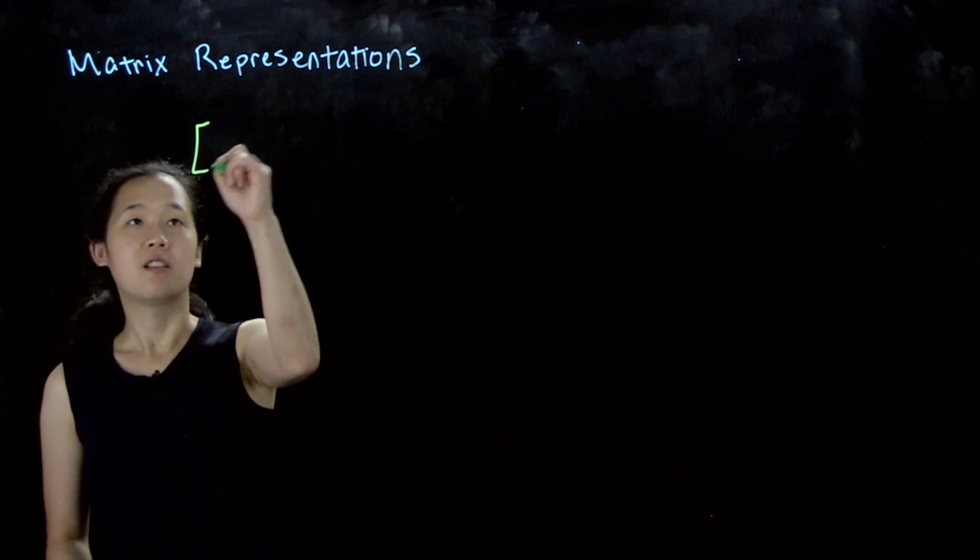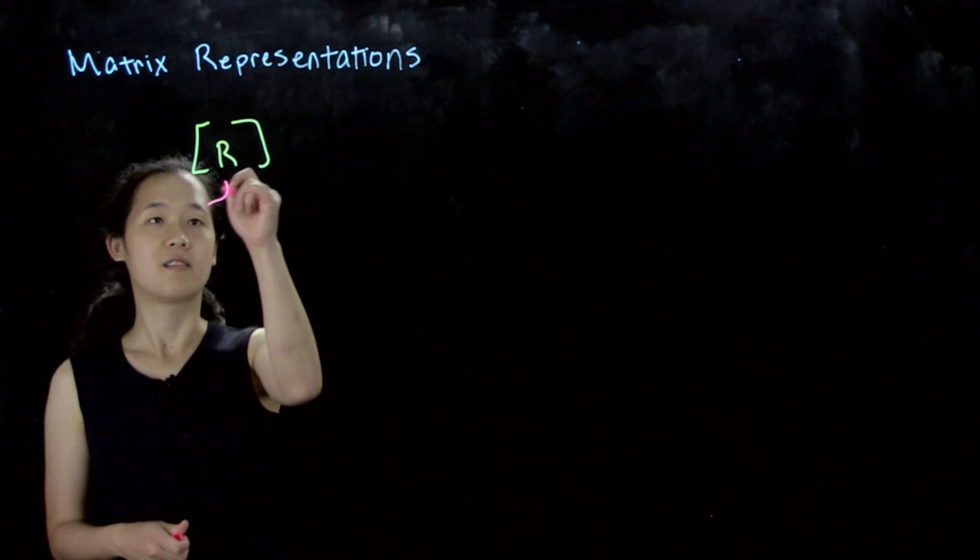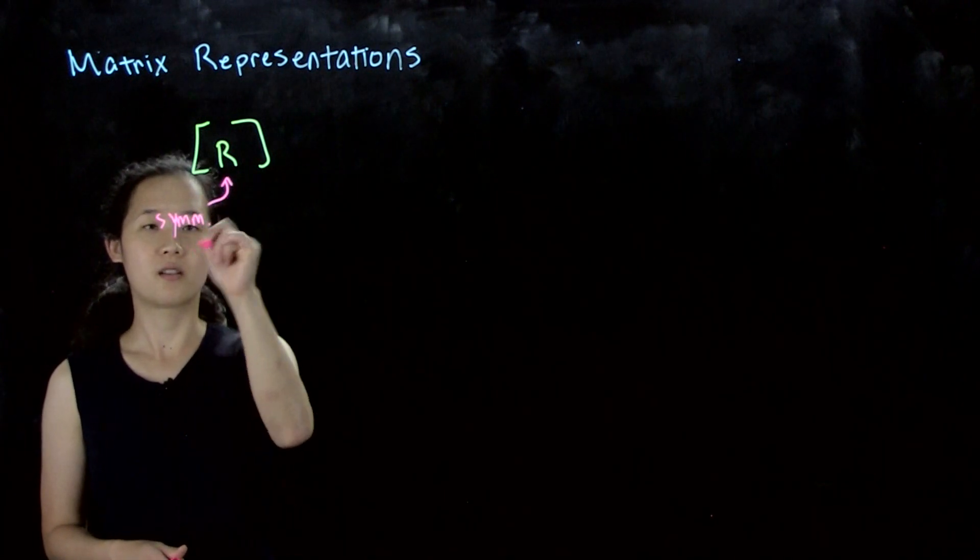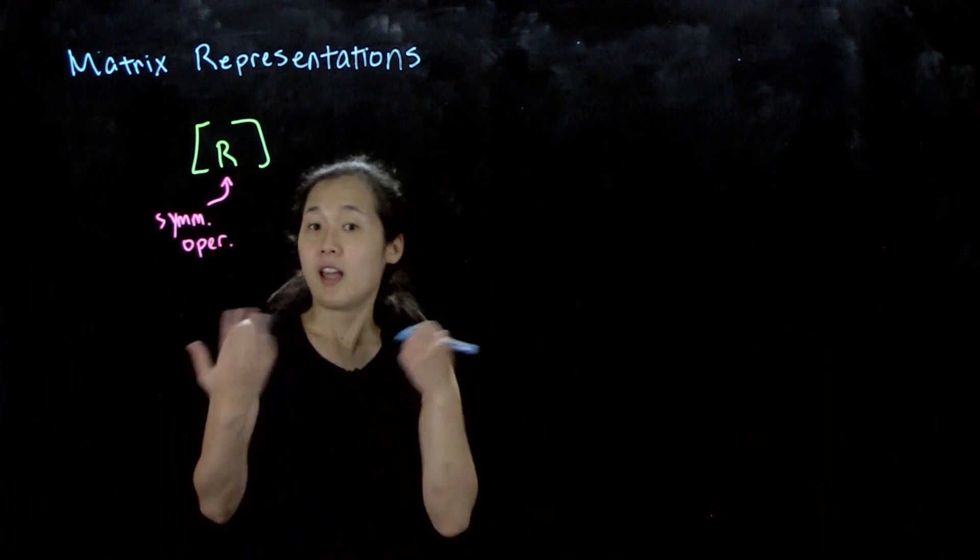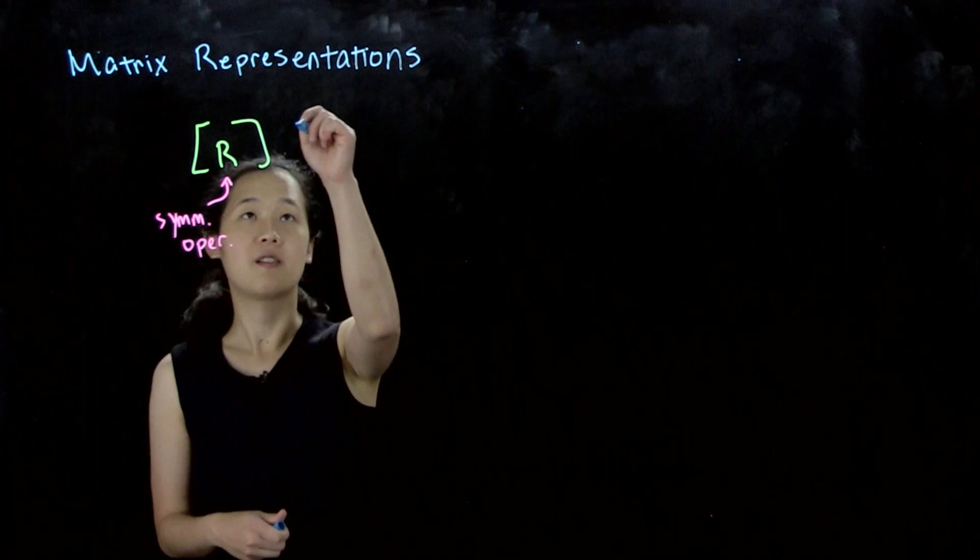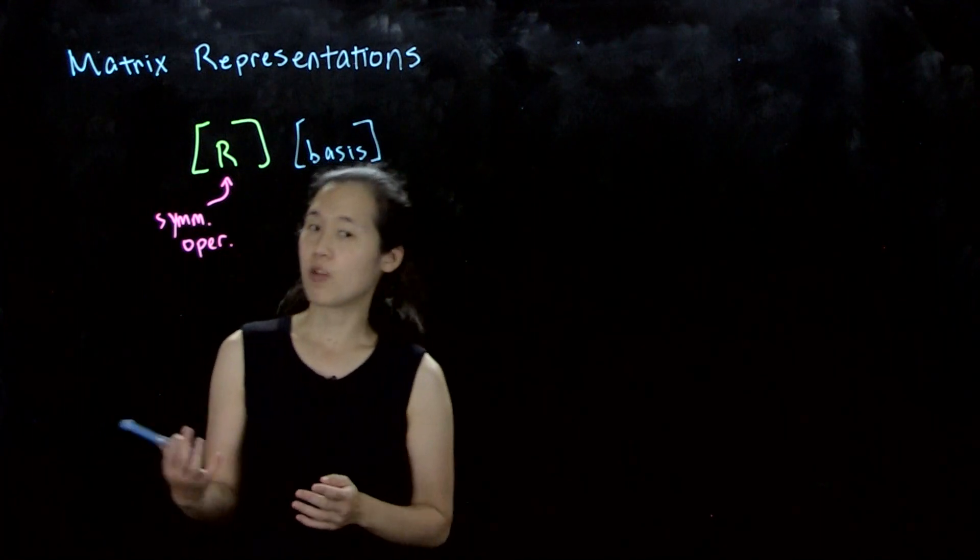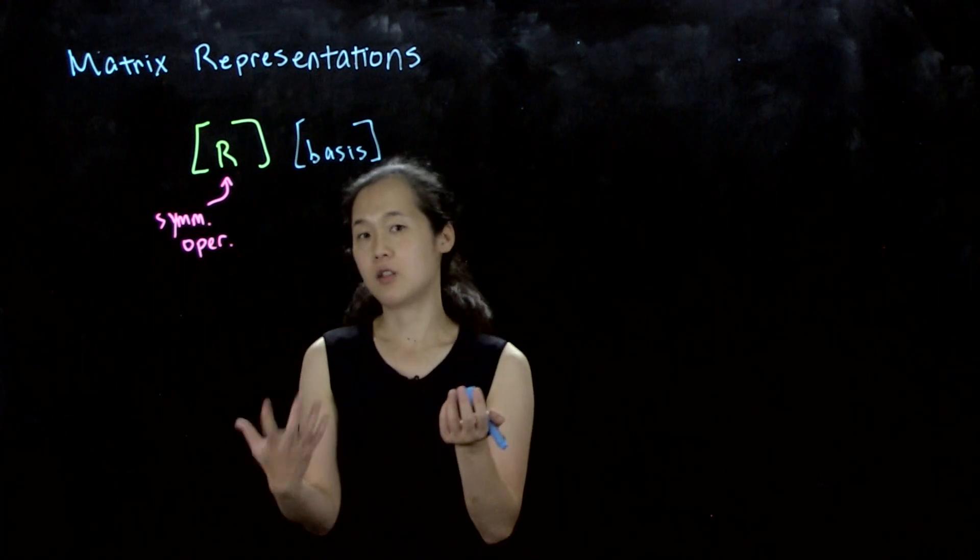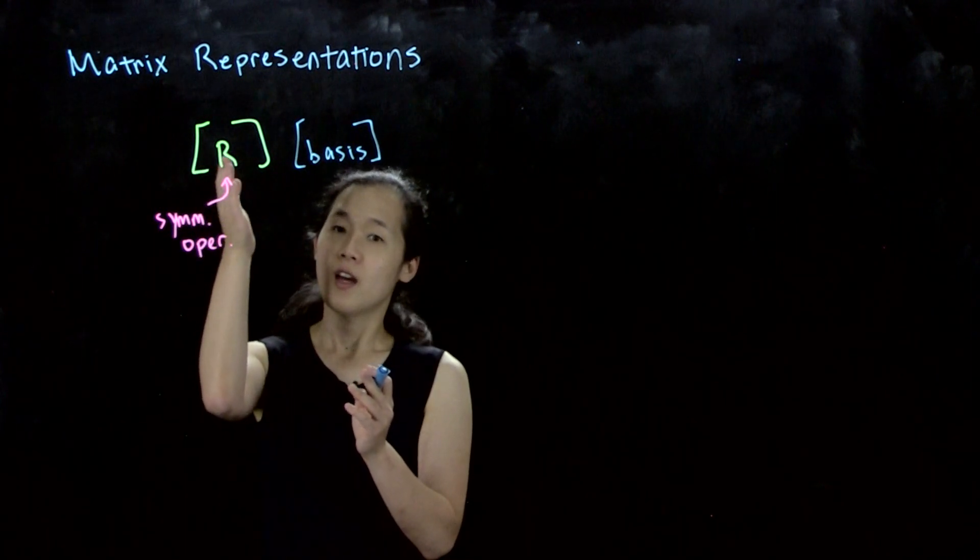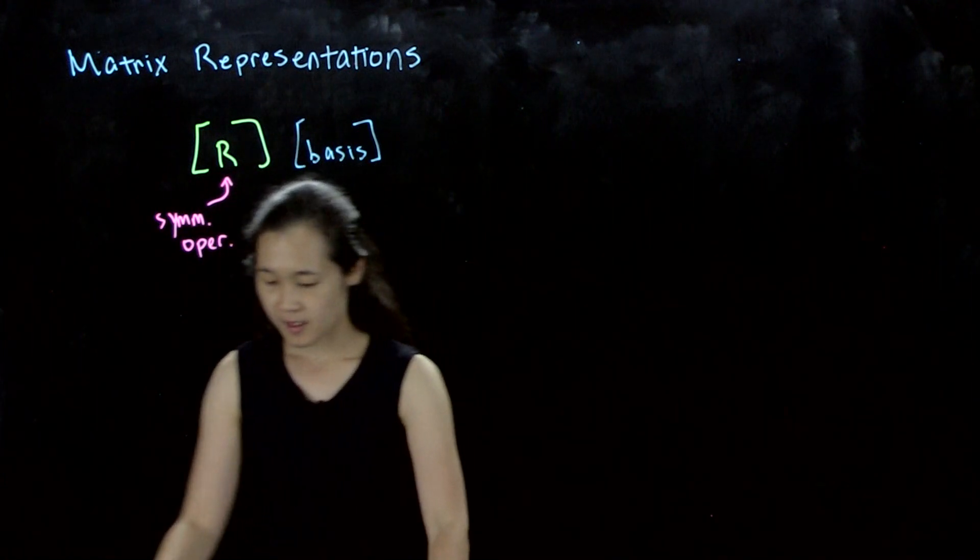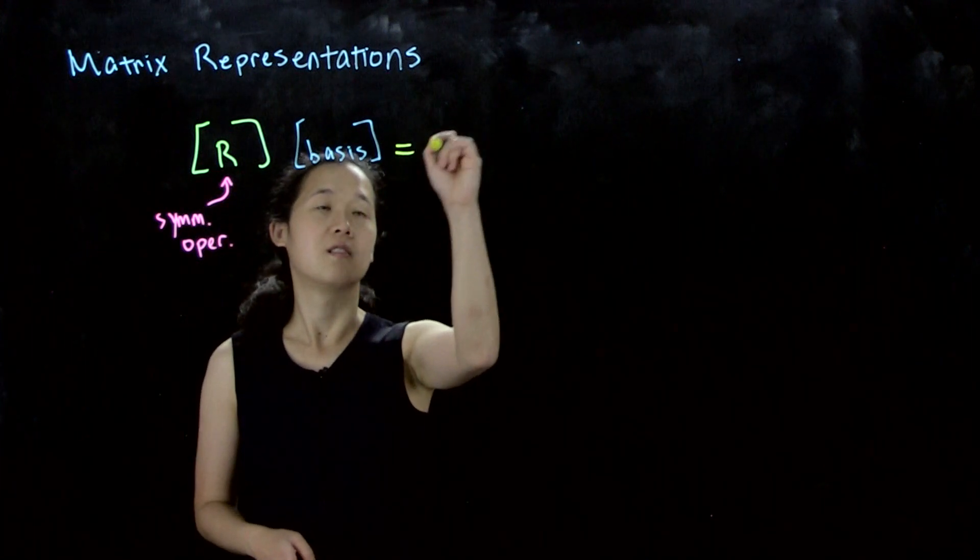If we have our symmetry operation R, this symmetry operation can act on any basis we want. In past classes we've been doing this with the molecule in question. For example, we did ammonia and labeled all the H atoms, then figured out how this operation transforms this basis into the new basis.